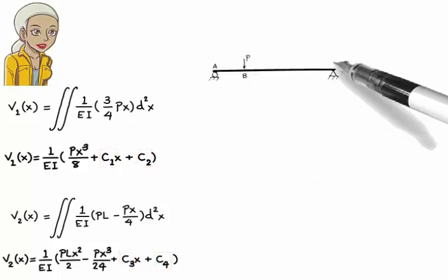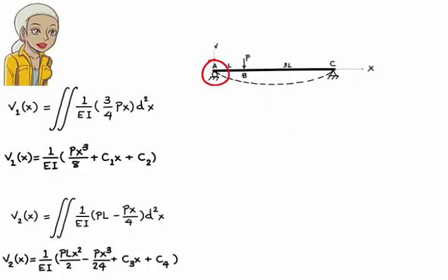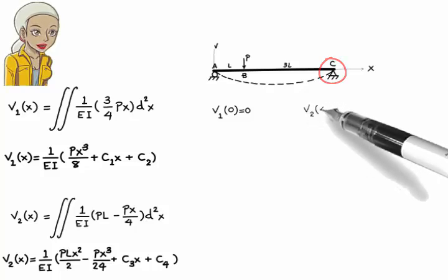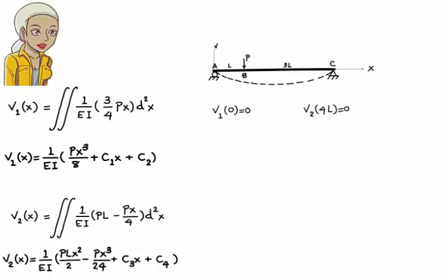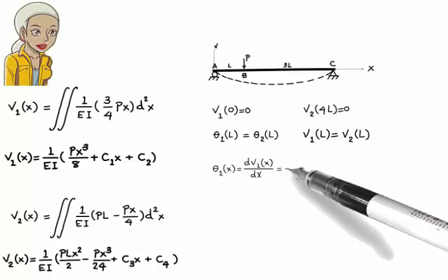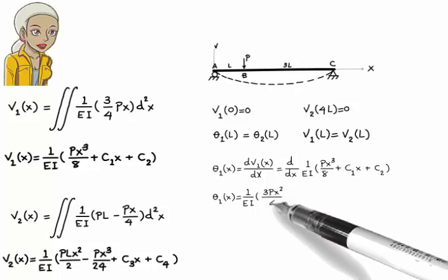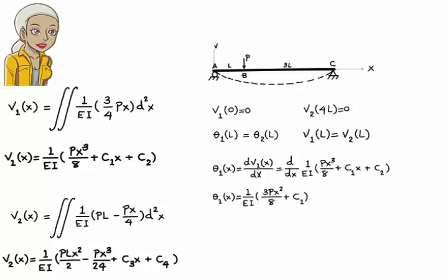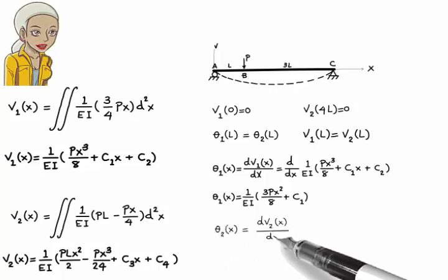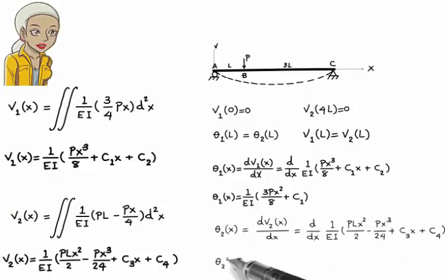The boundary conditions are: deflection at the left end of the beam is zero, that is v1(0) = 0; deflection at the right end is zero, that is v2(4L) = 0; slope of the elastic curve at point B must be continuous, that is θ1(L) = θ2(L); and deflection at point B must be continuous, that is v1(L) = v2(L). Since θ equals dv/dx, then θ1(x) = 1/EI × (3Px²/8 + C1) and θ2(x) = 1/EI × (PLx − Px²/8 + C3).